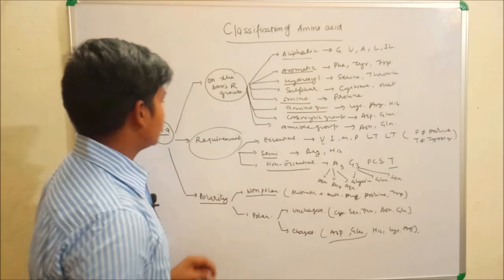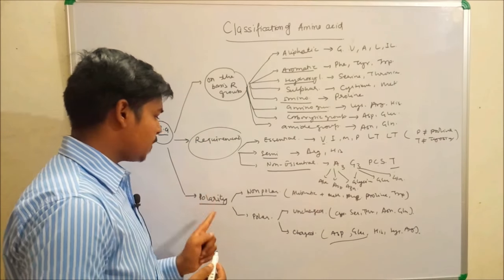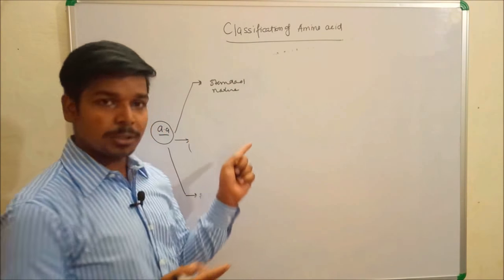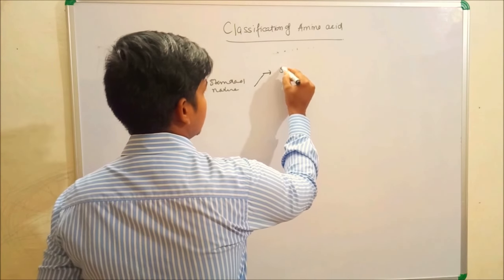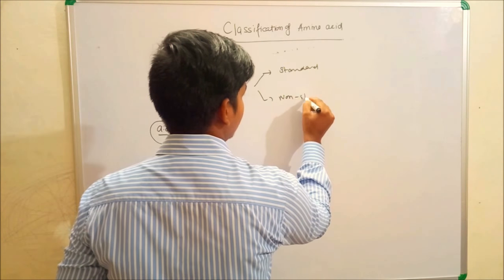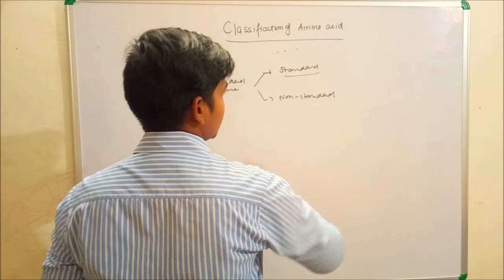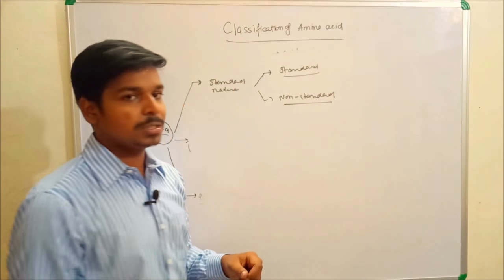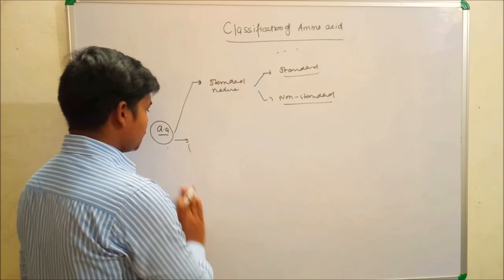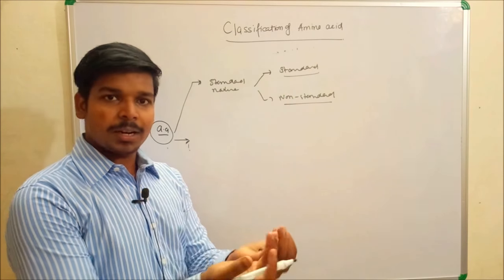The three basic classifications are by R group, requirement, and polarity. A fourth classification is based on standard nature — there are 20 standard amino acids and two non-standard amino acids: selenocysteine and pyrrolysine.